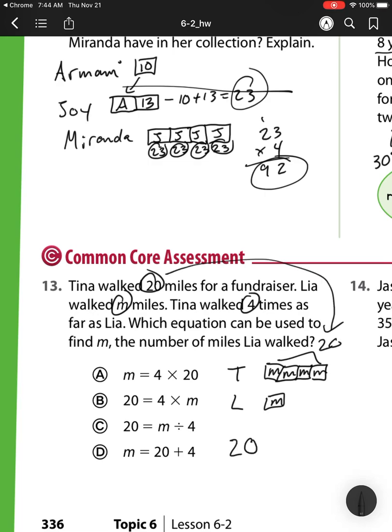So what equation is this? Well, I know 20 is equal to what? It's equal to 4 groups of m, which is B.